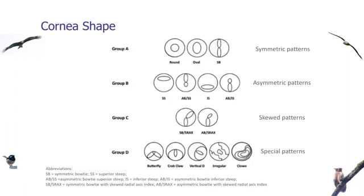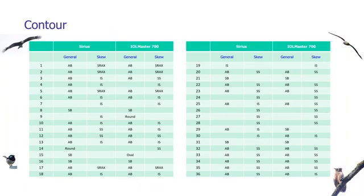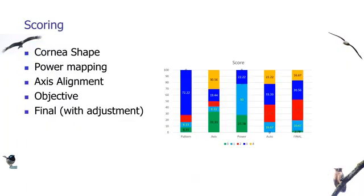Finally, we look at corneal shape based on Rabinowitz classifications. We match both the general shape and the axis as well. For example, this is a good contour improvement, the asymmetric bow type is skewed radial axis. This is a table of all eyes. When we look at all this together, we do a corneal score. The pattern has three points: zero for no match, one if either the shape is similar or the skewed radial axis matches, or three if both are similar. The axis has four points, the power has three points.